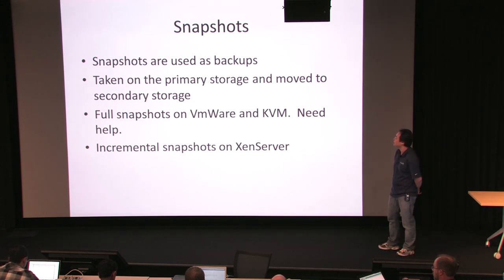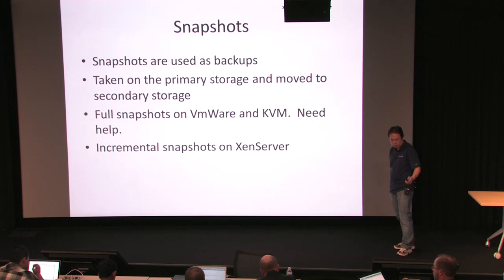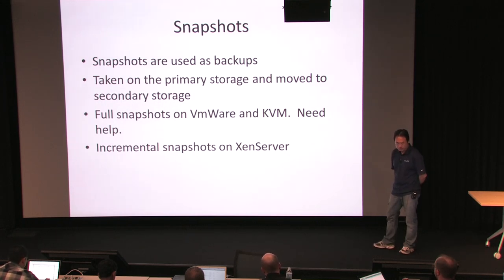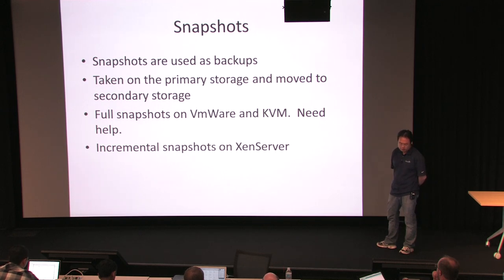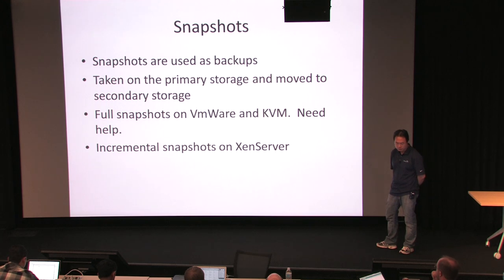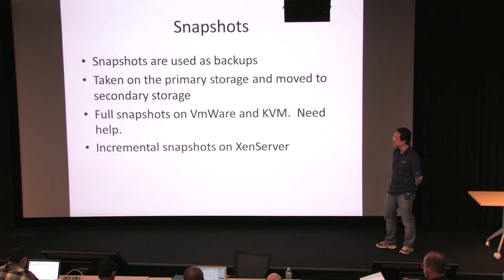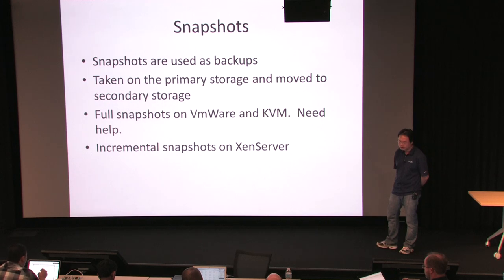Snapshots are meant to be used as backups for DRS. We take them on primary storage, move them to secondary storage, and then remove them from primary storage. Today we do full snapshots on VMware and KVM. KVM actually has a problem where it may not be crash-consistent when you take the snapshot, but that's a problem with the hypervisor. We need help adding incremental snapshots to these two hypervisors specifically. We do incremental snapshots on XenServer.